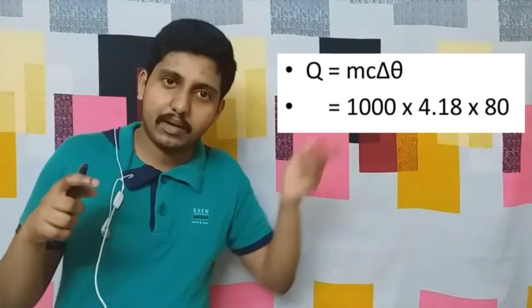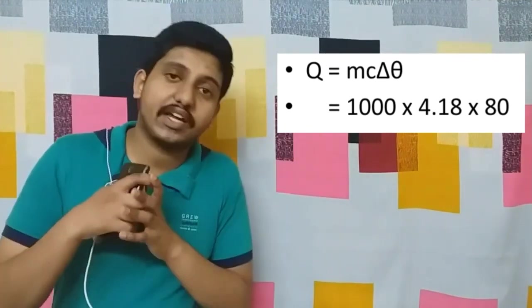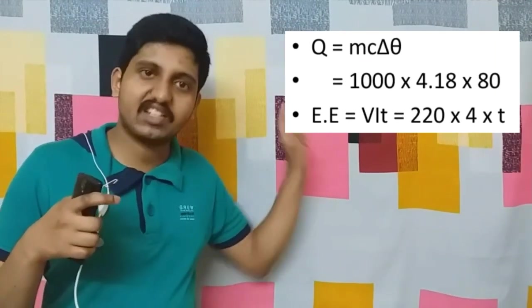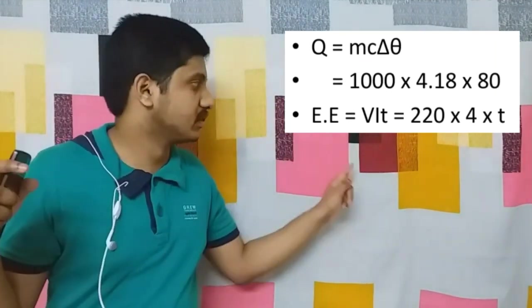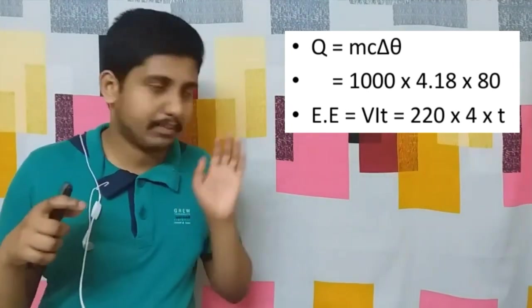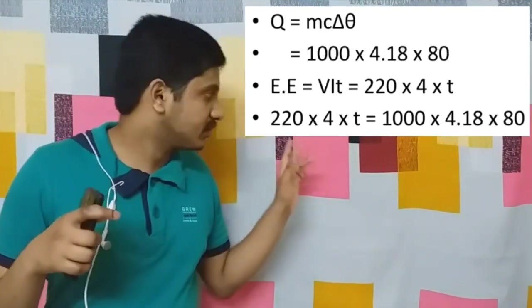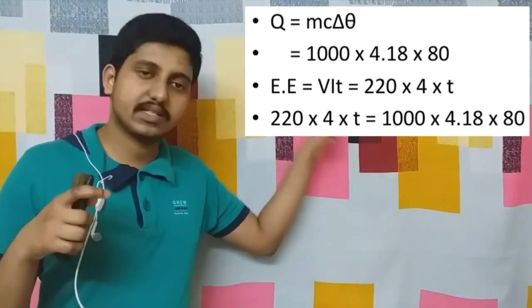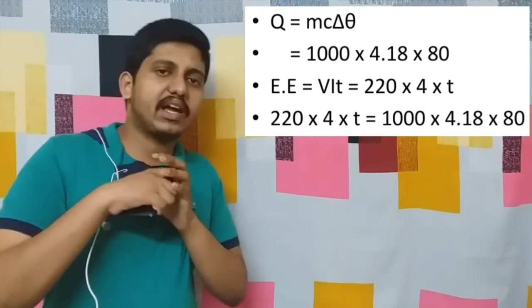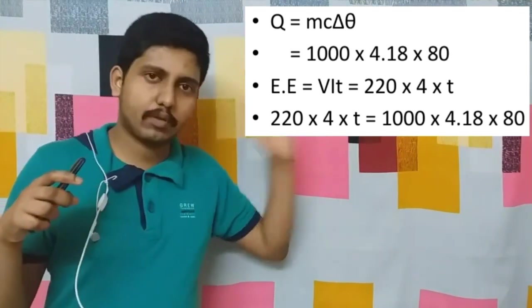Electrical energy is power into time. Power is VI, so we have electrical energy = VIt, which is 220 volt × 4 ampere × t. So just equate them both: 220 × 4 × t = 1000 × 4.18 × 80.